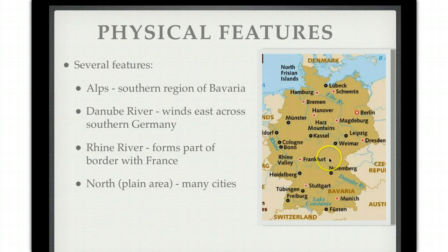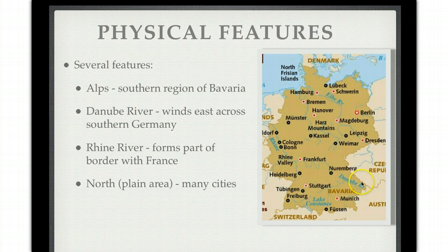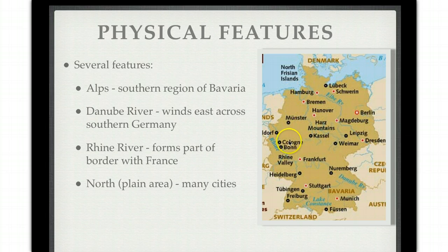Looking at some physical features: in the southern region of Germany — the state known as Bavaria — we have the Alps running into Switzerland, not the north. We also have the Danube River, which winds east across southern Germany, flowing out of the eastern side of southern Germany. We also have the Rhine River, which helps form part of the border with France. To the north we have a large plain area where many cities are located — you can quickly see that there are more cities in the north than in the south.